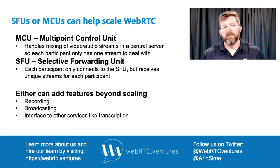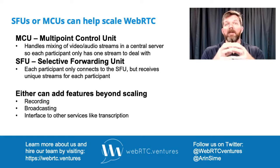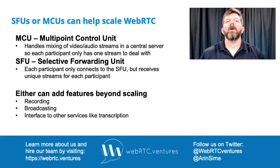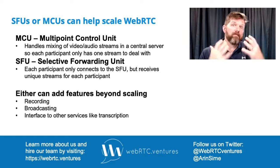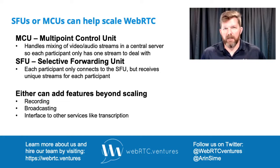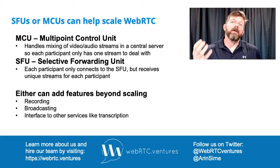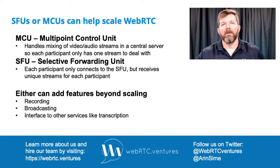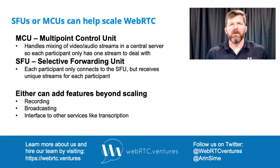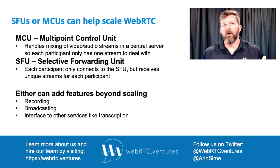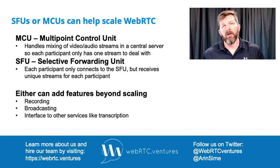An SFU — a selective forwarding unit — still has the benefit of each participant only connecting to a single media server, instead of connecting peer-to-peer with every user in that group video chat. So it avoids full mesh topology complexity, but users do still receive individual streams from each participant, which gives them some additional control. Regardless of whether you're using an MCU or SFU, you might use one for scaling purposes or to add features you can't do in a pure peer-to-peer WebRTC call.